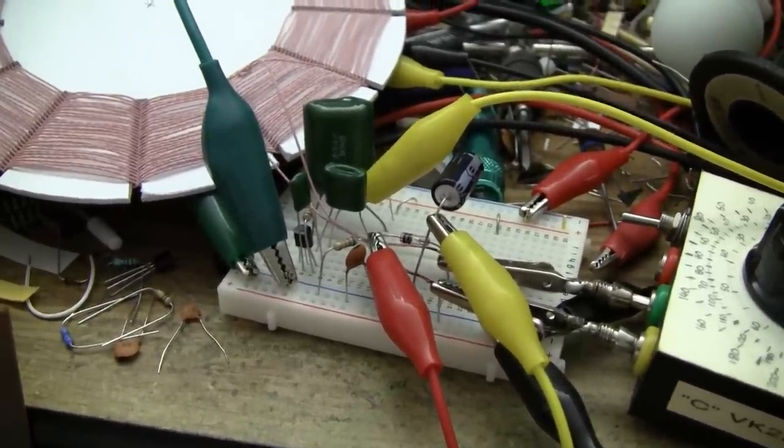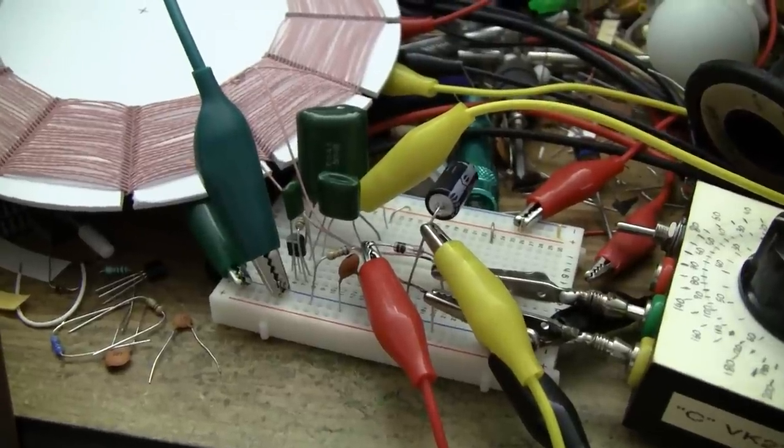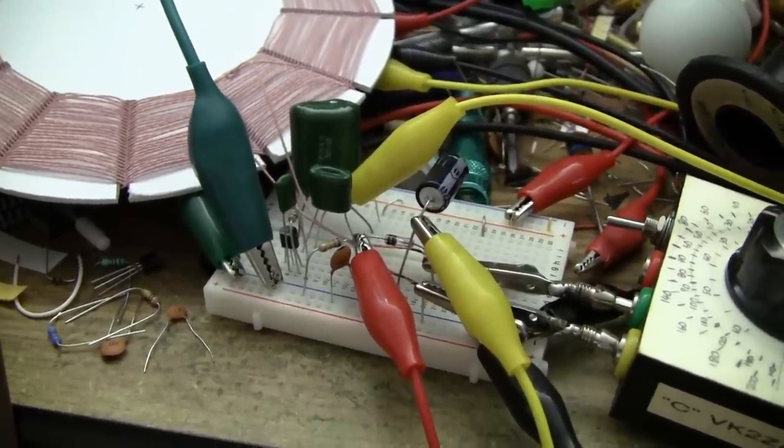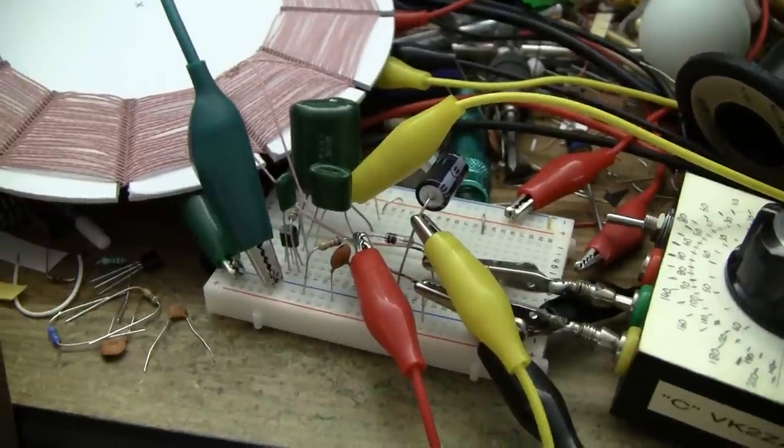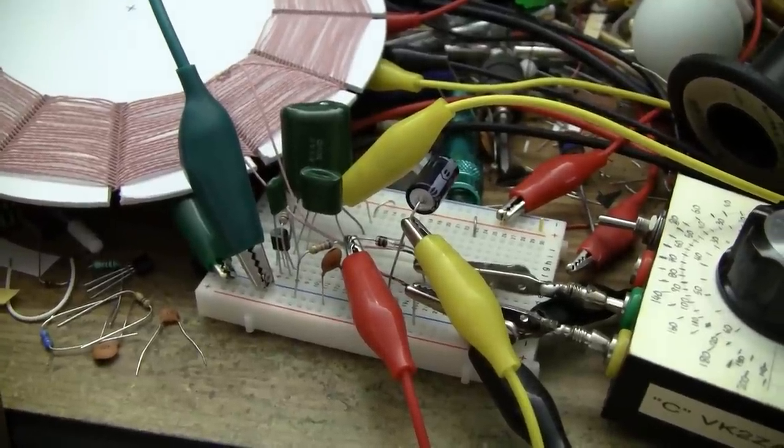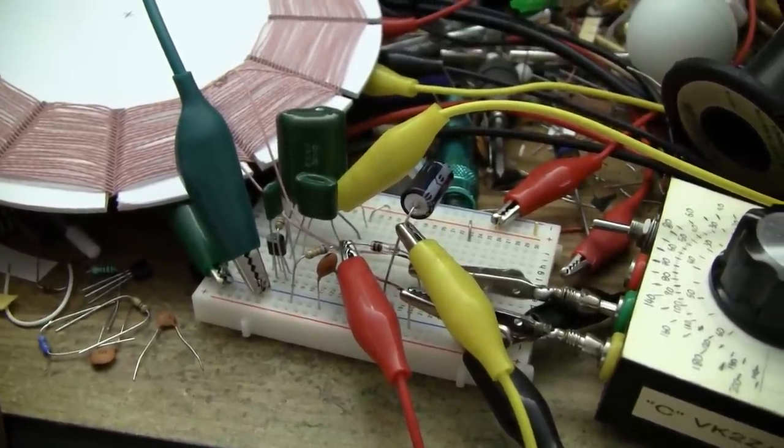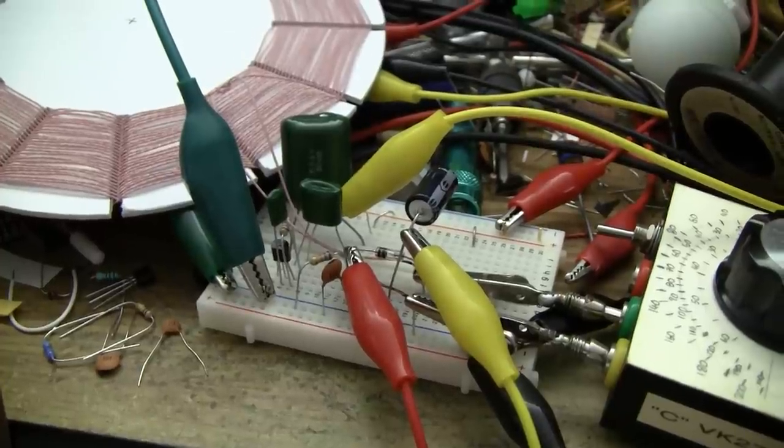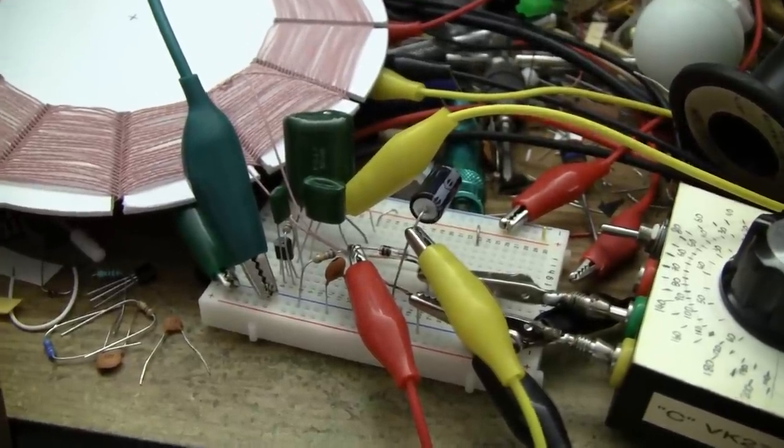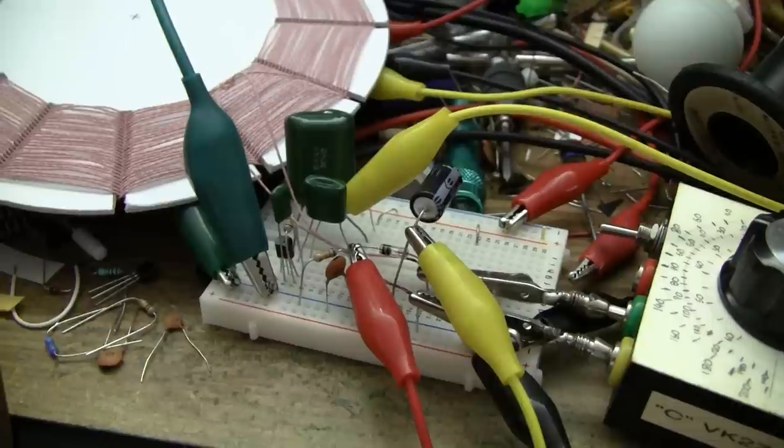That will bias the diode and give you kind of like a direct conversion receiver. It works particularly well and it works even better than the germanium diode but again it's not passive, kind of ruins the spirit of it but it does allow you to receive SSB and CW signals so if you wanted to listen to the amateur bands with it it would be the way to go and we might actually do a little project on that later.